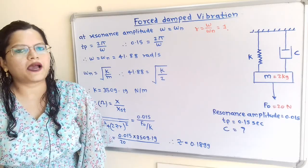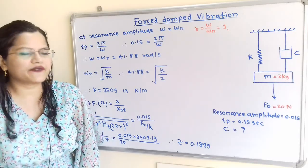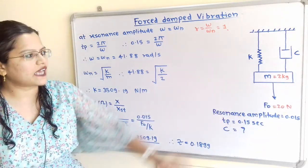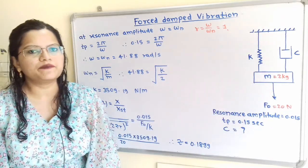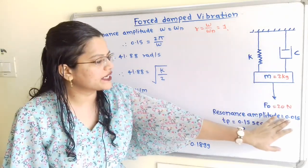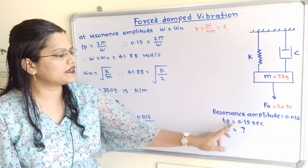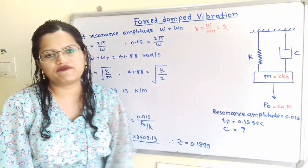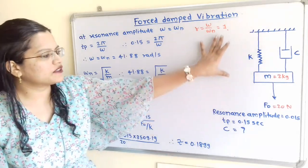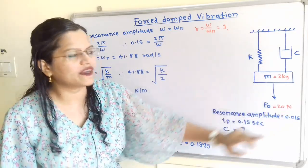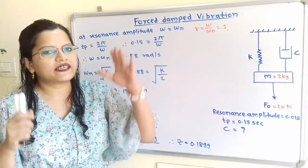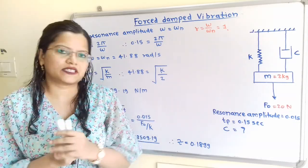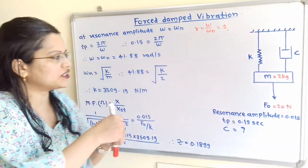We will solve the first part of the question. Mass M is given 2 kg, harmonic excitation force 20 N applied on the spring-mass-damper system, and resonant amplitude is given 0.015 meter. Time period T_P is 0.15 second and we have to find out the value of damping coefficient C. When the harmonic force F₀ = 20 N is applied on this system, the system vibrates at resonant amplitude, which is the maximum amplitude, denoted as capital X.